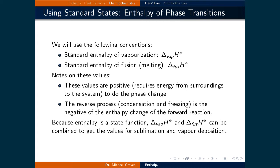It is an unfortunate naming convention here that a positive standard change in enthalpy of fusion is the melting of a substance. For the reverse process, meaning condensation and freezing, the standard change in enthalpy is negative, meaning that the system is transferring heat to the surroundings. Also, since enthalpy is a state function, the standard change in enthalpy of vaporization and fusion can be combined to get the values for sublimation and vapor deposition.